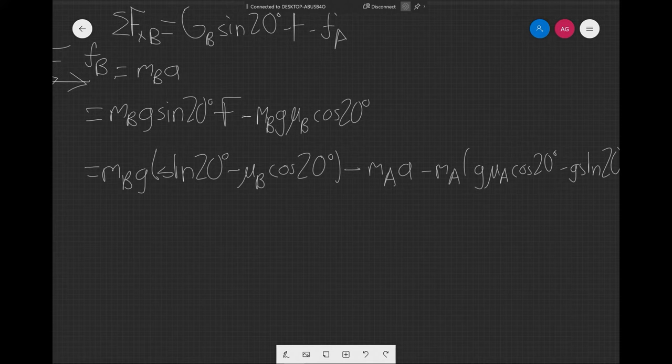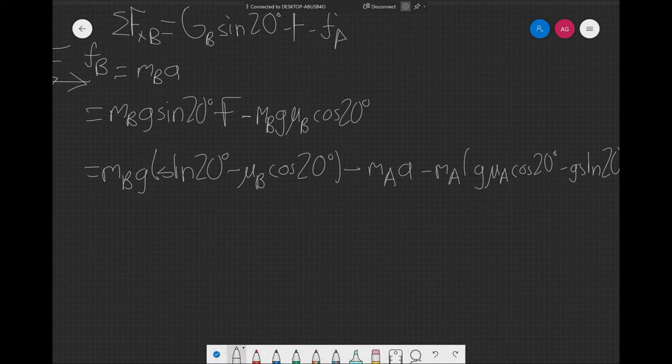Once we have that, we only have one equation with a as a variable. So these equals that, and from there we can add M_A times the acceleration on both sides and get M_B plus M_A times the acceleration is equal to all our other terms.